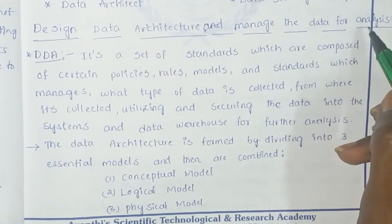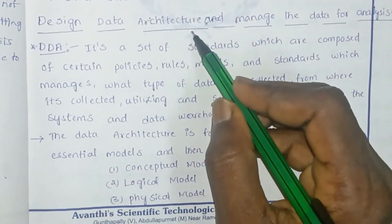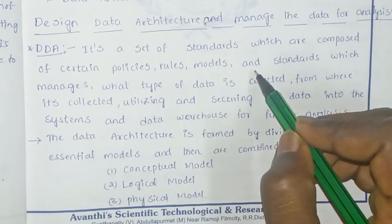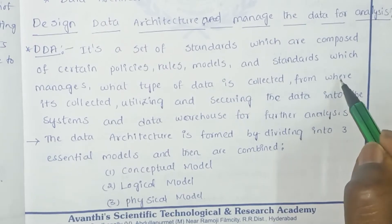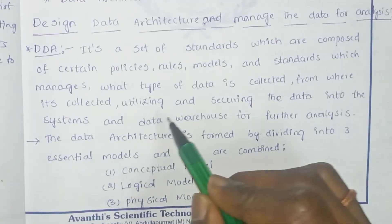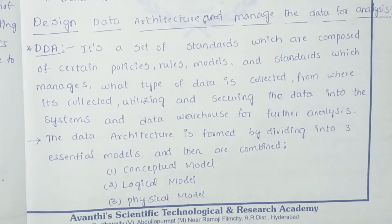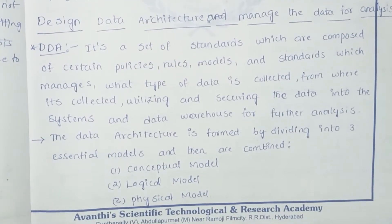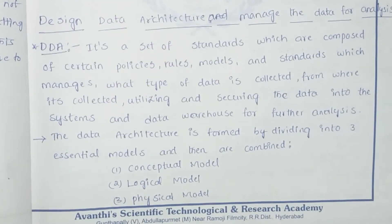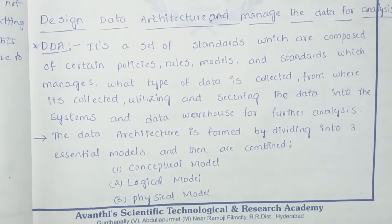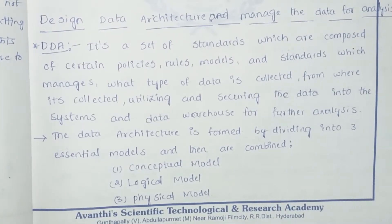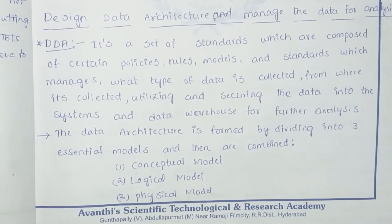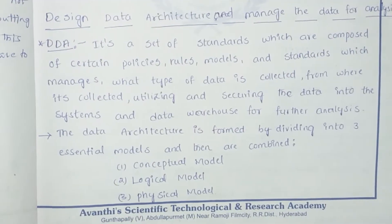DDA stands for Design Data Architecture. It is a set of substance standards composed of certain policies, rules, models, and standards which manage what type of data is collected, from where it is collected, how it is utilized, and how it is secured into the systems and data warehouse for further analysis. These policies and standards are the key components of data architecture.